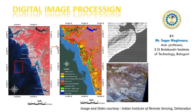Digital image processing doesn't deal only with classification — it also deals with distortions. In this image you can see lines; there are techniques to remove these. In this class, we'll be talking only about how to identify features and what are the basic steps used in the identification of features.